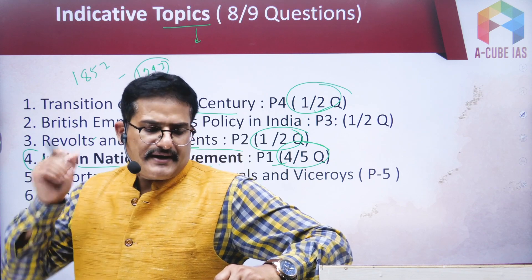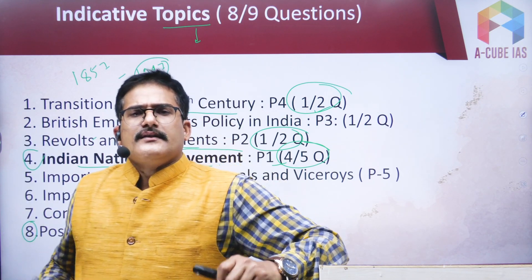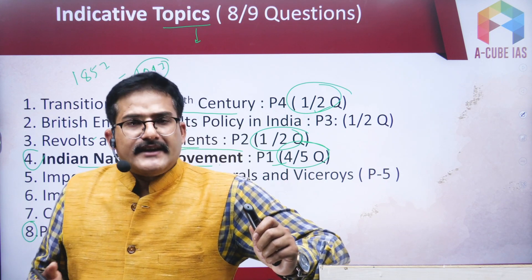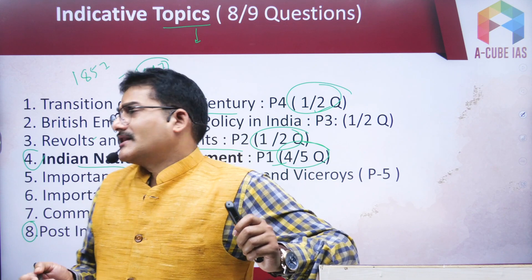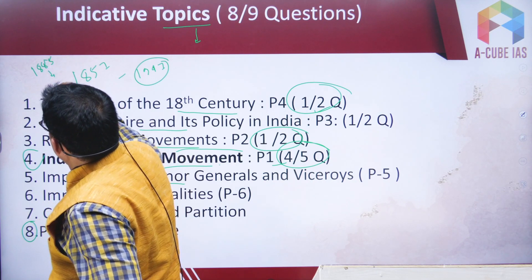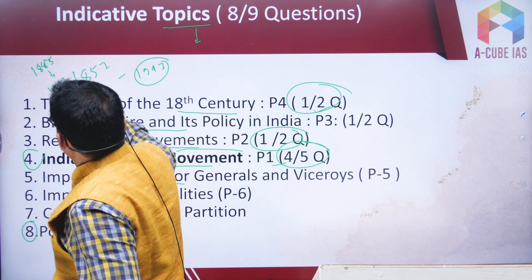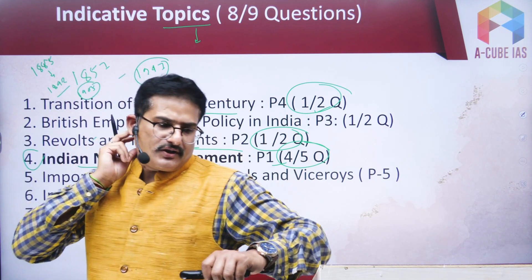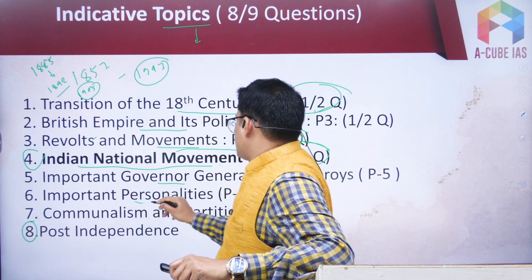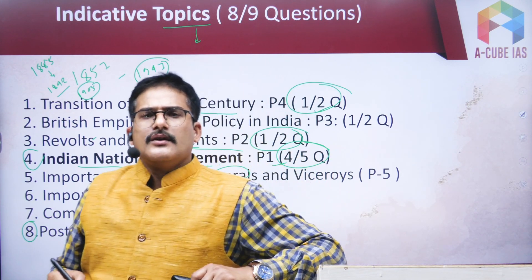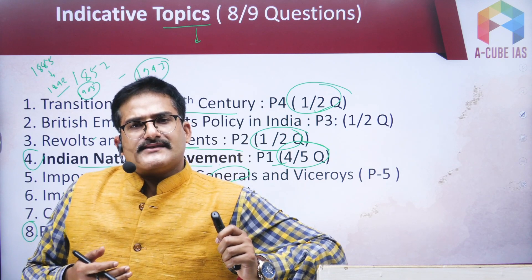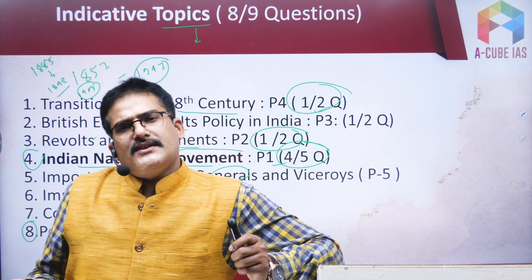The fifth topic is important Governor Generals of the British Empire. There are two ways to study history — chronologically, such as the formation of Congress in 1885, the Council Act of 1892, the Partition of Bengal in 1905 — or via Governor Generals, studying what changes and developments occurred during each Governor General's regime. Both approaches are valid.